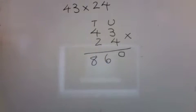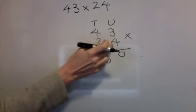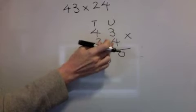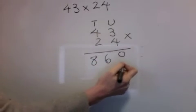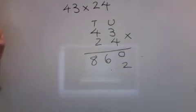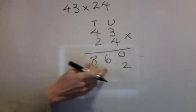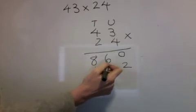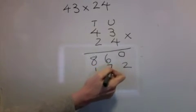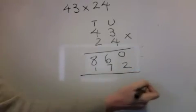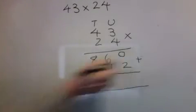Now I'm going to multiply by the 4. Units first. 4 times 3 is 12 — one on the doorstep. 4 times 4 is 16 — let him in. 16 and 1 is 17. Now I need to add them together.